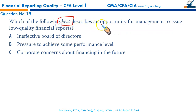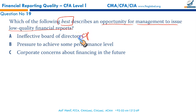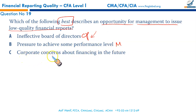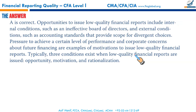Which best describes an opportunity for management to issue a low quality financial report? An ineffective board of directors — opportunity. A weaker system of internal controls — opportunity; no one really checks. A sleeping audit committee — opportunity. When such situations exist, financial accounting managers can play around. Pressure to achieve some performance — that is motivation. Corporate concerns about future financing — that is also pressure or motivation. A is the correct answer.